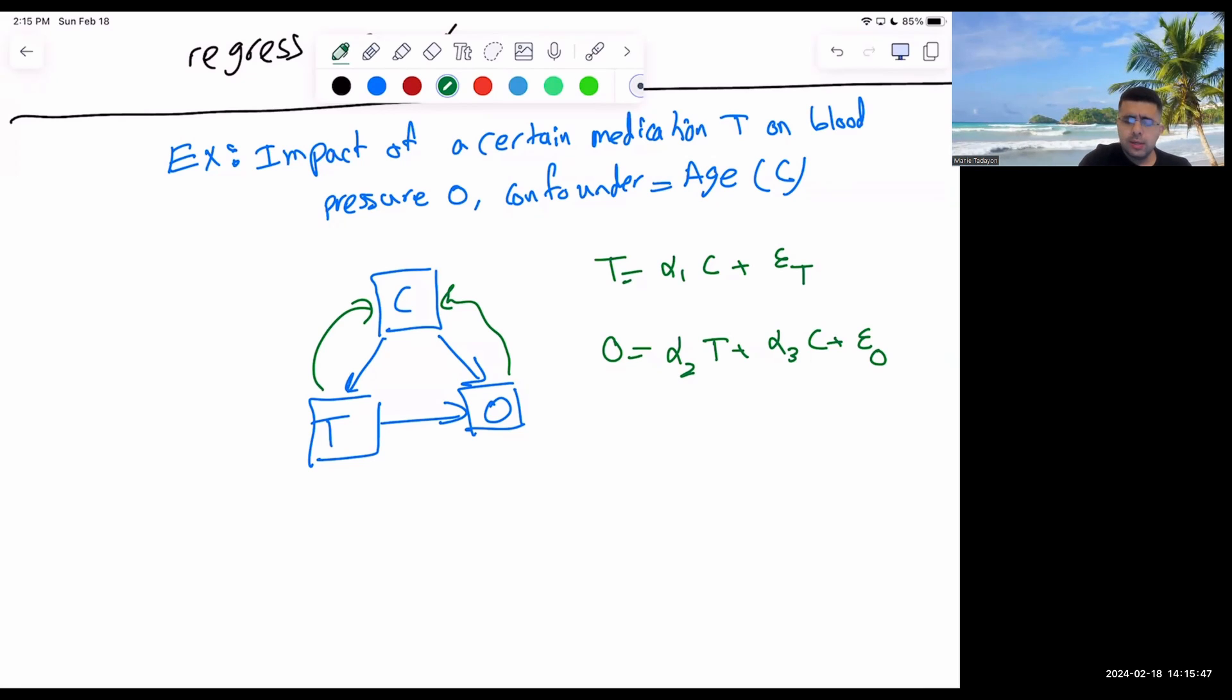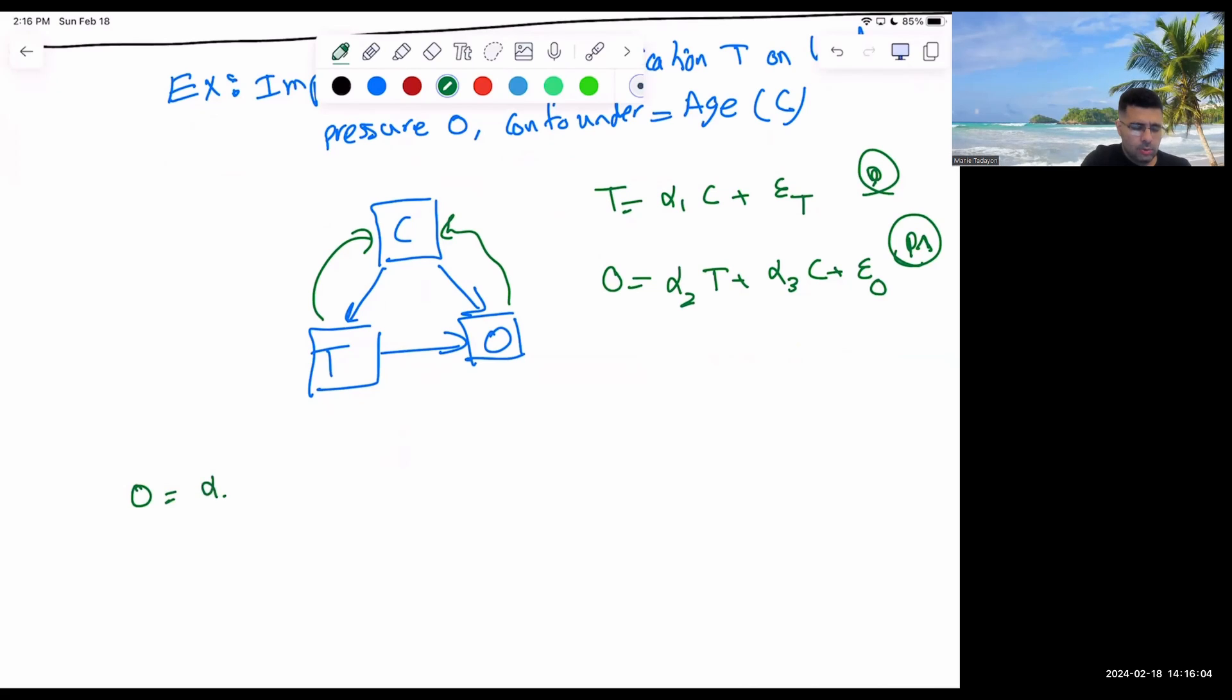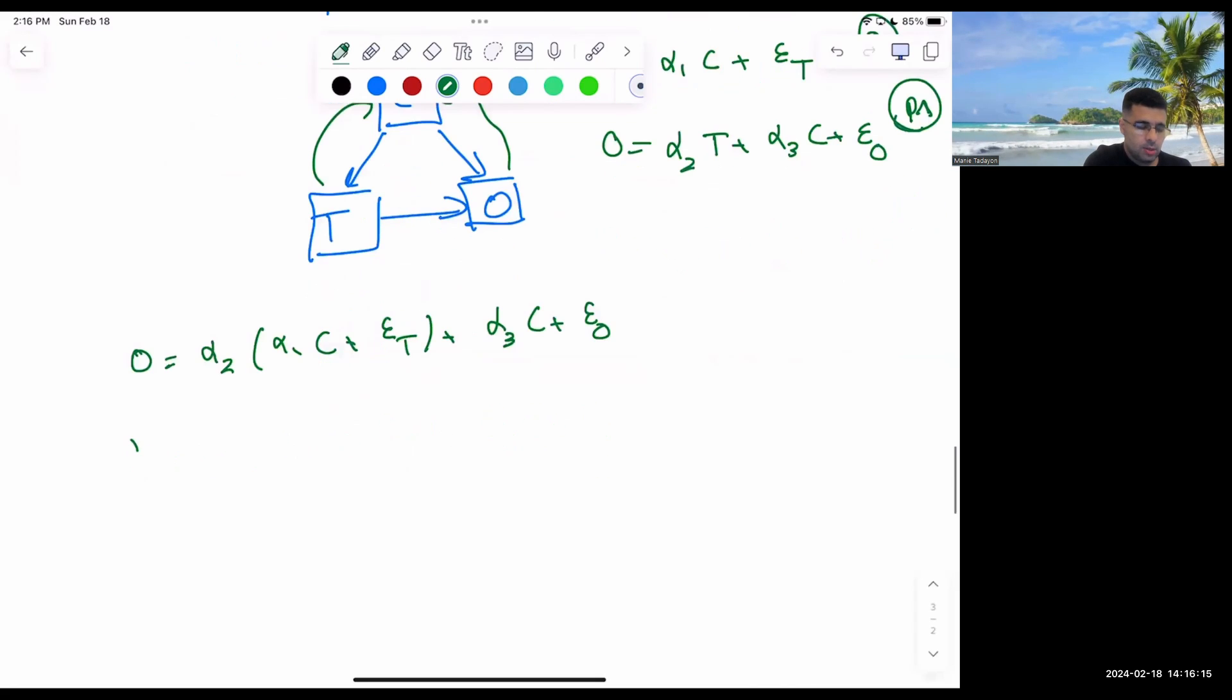So what we want to do here is I want to go ahead, I write this one star, I write this one double star. So I want to go ahead and rewrite double star in terms of by replacing T based on this C.